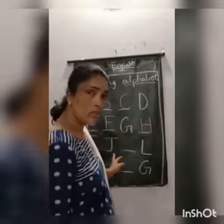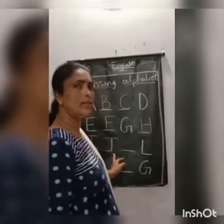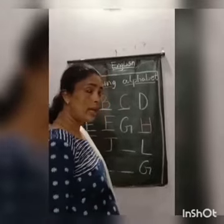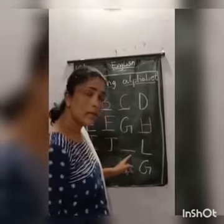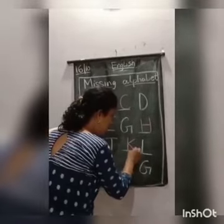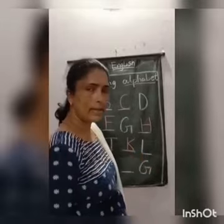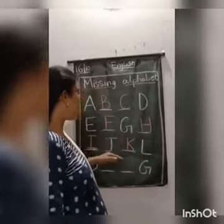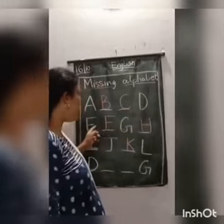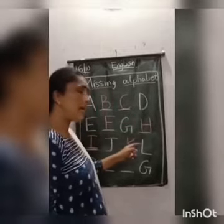After I, we have J. It has already written J. After J, what comes? K. Then we have L. So we check again: A, B, C, D, E, F, G, H, I, J, K, L.